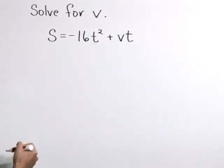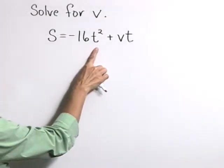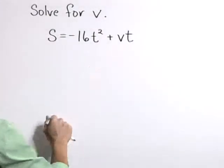Solve for v. Here we have the formula s is equal to negative 16 t squared plus v times t.